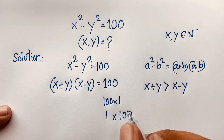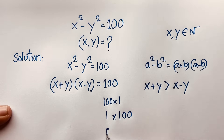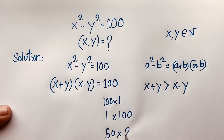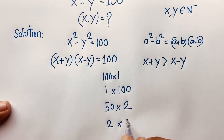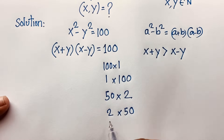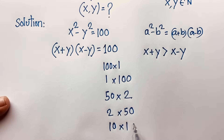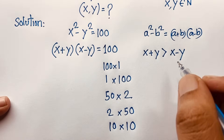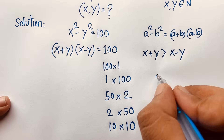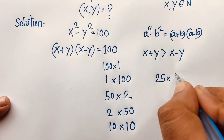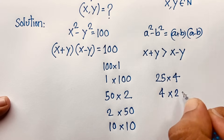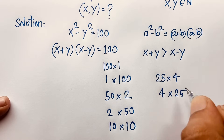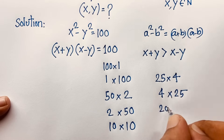The other factor pairs are: 50 times 2, or 2 times 50; 10 times 10; and 25 times 4, or 4 times 25.